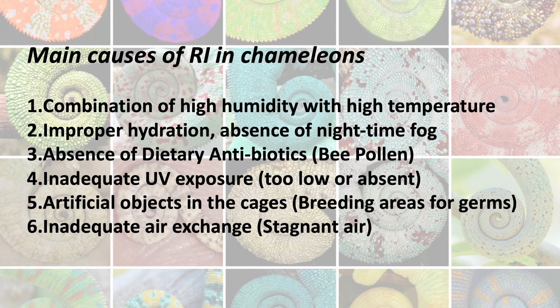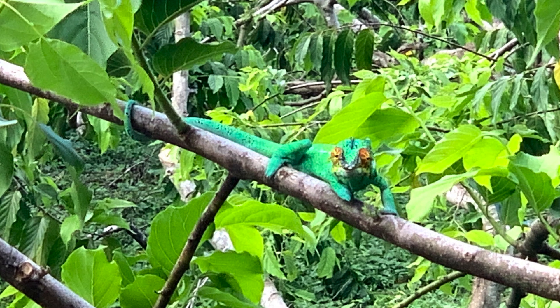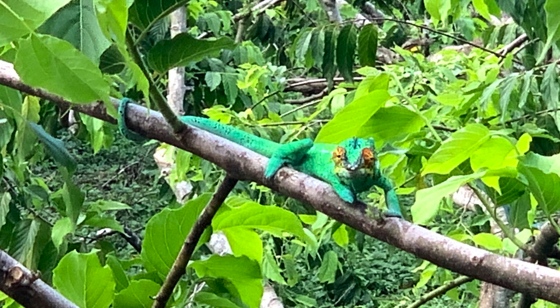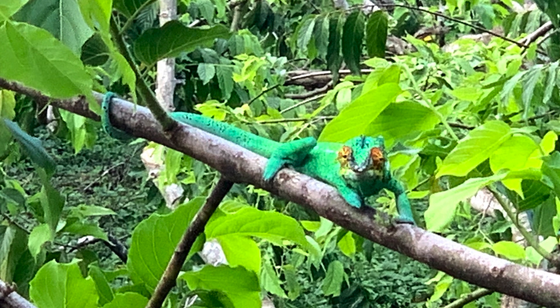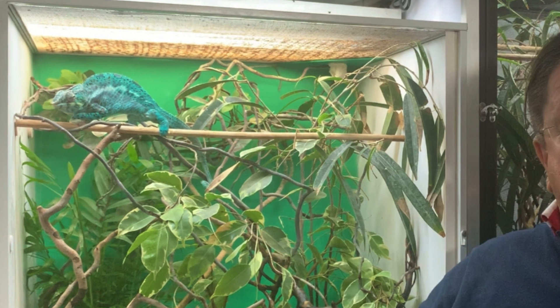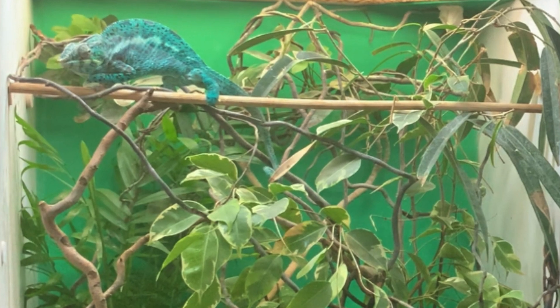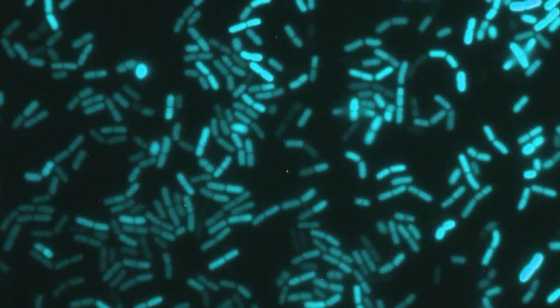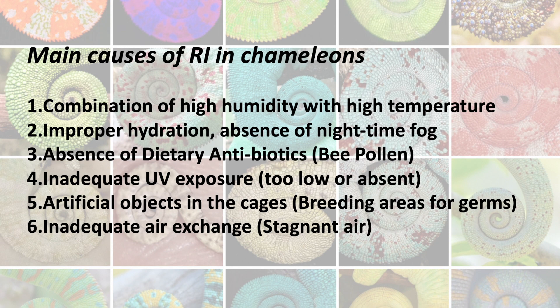Last but not least, the reason is inadequate air exchange. Chameleons in the wild usually occupy trees, bushes, and their canopies, which are airy and full of permanently moving air. In captivity, we close them into small cages — especially glass cages with insufficient ventilation surfaces — and the air becomes stagnant. Stagnant air is again a condition that helps bacteria and fungi thrive and increase their concentration in the cage, and the result is an ill chameleon suffering from respiratory disease.